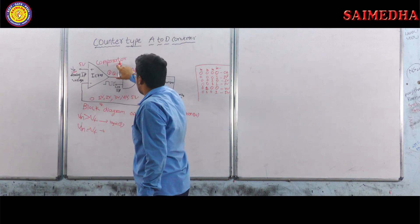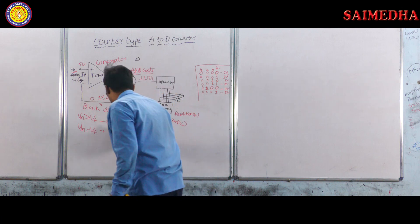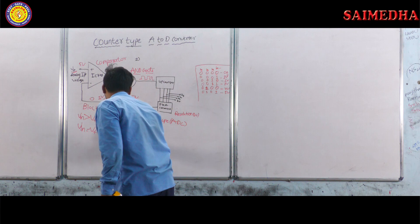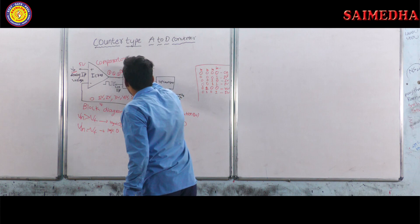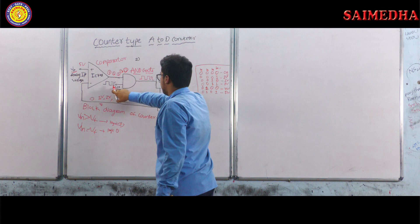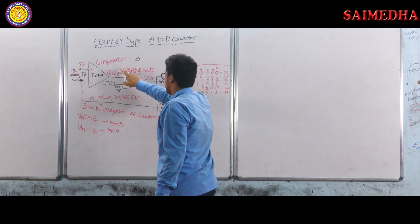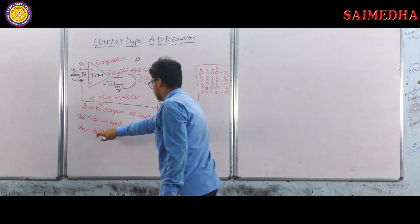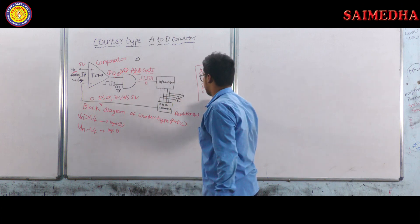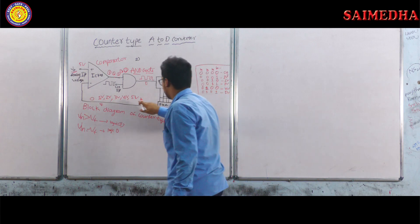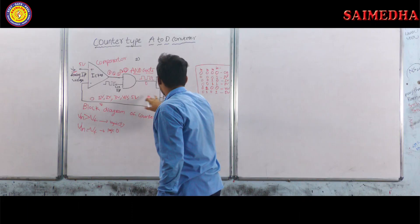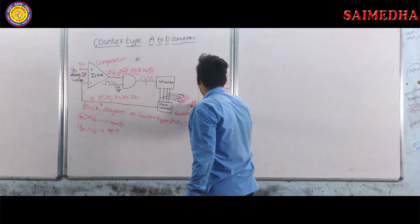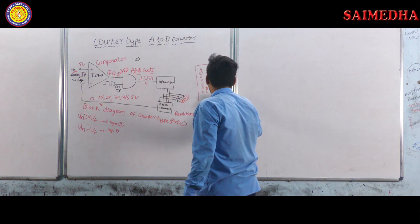When VIN equals VF at five volts, the comparator produces logic zero. This zero is given to the AND gate — anything multiplied by zero gives zero — so the up counter operation stops. The D to A converter value holds at five volts, and the output taken across the terminals is 0101 in digital form.